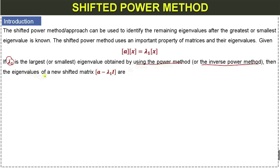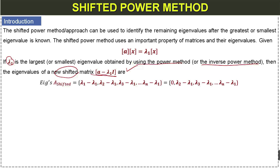The eigenvalues of the shifted matrix will be: lambda_1 minus lambda_1, lambda_2 minus lambda_1, lambda_3 minus lambda_1, and up to lambda_n minus lambda_1. These are the eigenvalues of the shifted matrix.